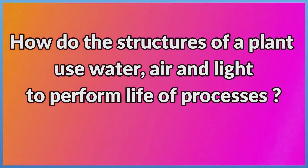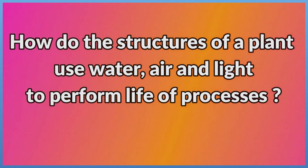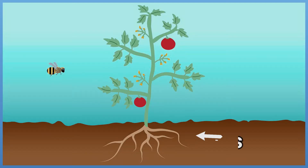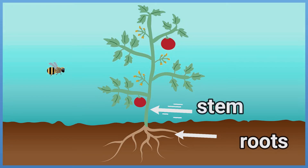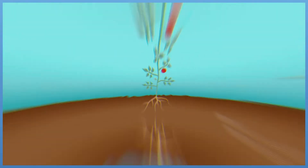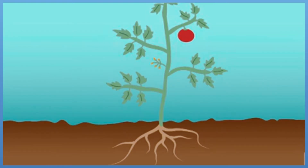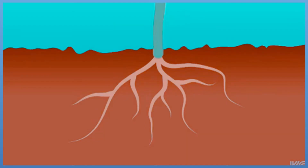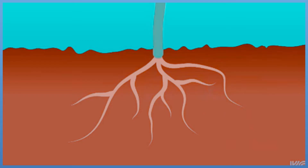How do the structures of a plant use water, air and light to perform life processes? Plants have roots, stem, leaves, and sometimes flowers or fruit. Plants use these specialized structures to obtain their basic needs of water and light. Each part of a plant has its own function, where the roots help the plant get nutrients from the soil and the other parts of the plant help it survive.